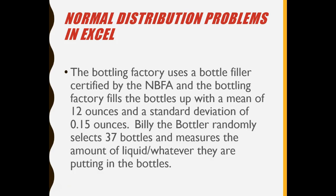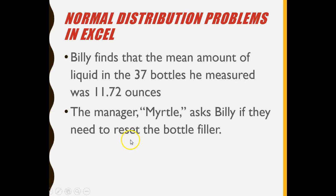This one doesn't involve the calculator. This involves a real world application. We've got a bottling factory that uses a bottle filler certified by the National Bottle Fillers of America. I made that up. And the bottling factory, this is kind of a tongue twister, the bottling factory fills the bottles up with a mean of 12 ounces and a standard deviation of 0.15 ounces. Billy the bottler randomly selects 37 bottles and measures the amount of liquid, whatever they're putting in the bottles. Billy finds that the mean amount of liquid in the 37 bottles he measured was 11.72 ounces. Billy's manager, Myrtle, asked Billy if they need to reset the bottle filler or the bottle filling machine.